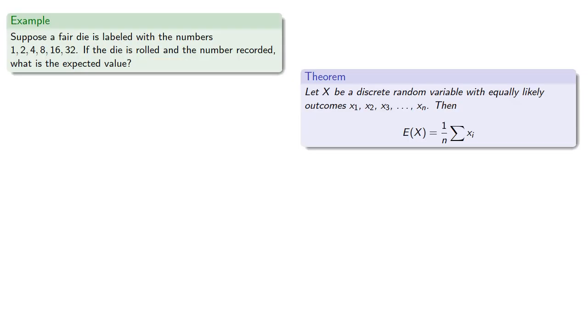It's important to remember that these are the actual outcomes. So suppose a fair die is labeled with numbers 1, 2, 4, 8, 16, and 32. If the die is rolled and the number recorded, what is the expected value? So here there are six equally likely outcomes, so we'll sum those outcomes.